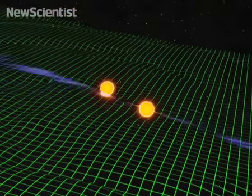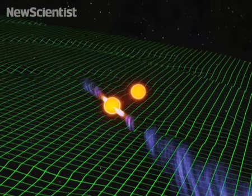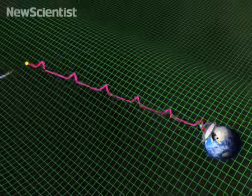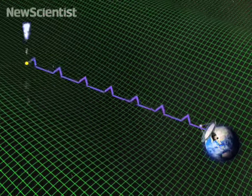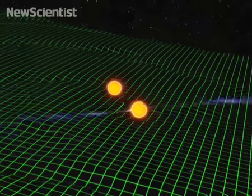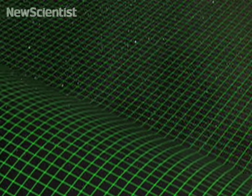It fires powerful beams of electromagnetic radiation into space. Pulsars many light-years away are detected when their beams hit Earth. Scientists think these beams could reveal gravitational waves.